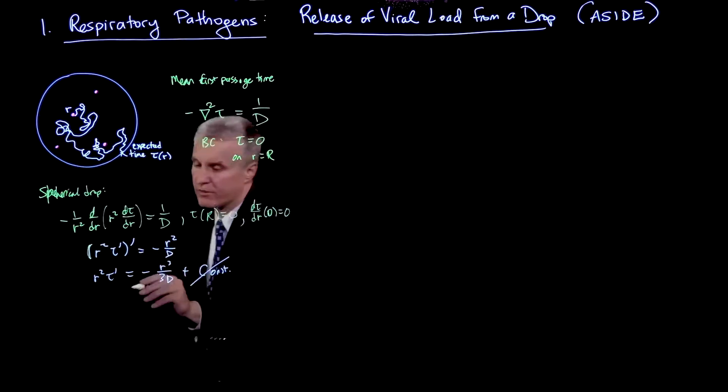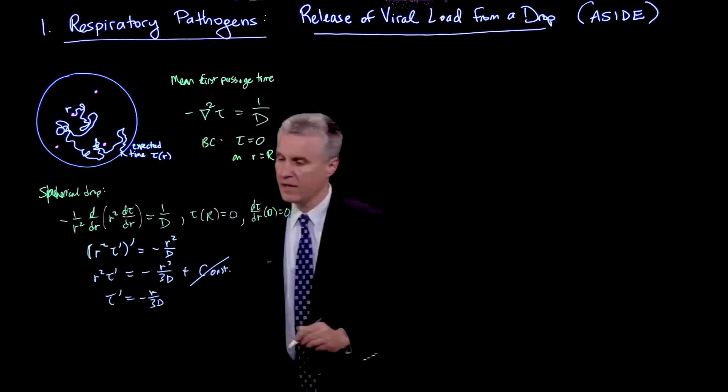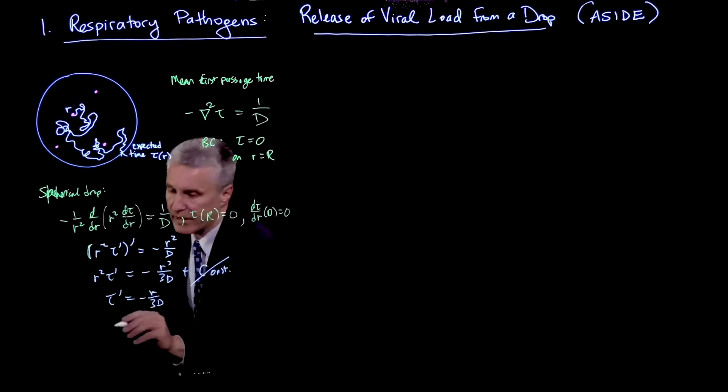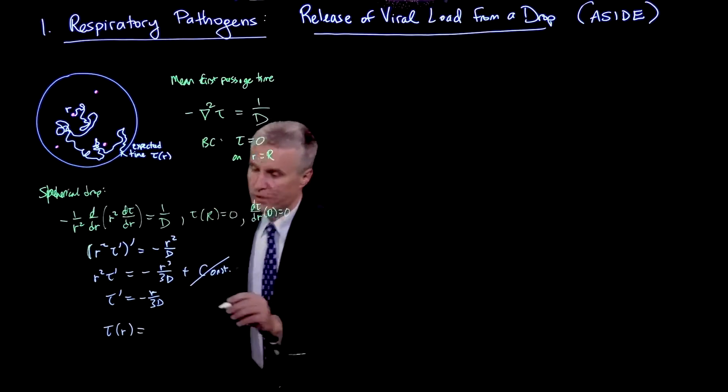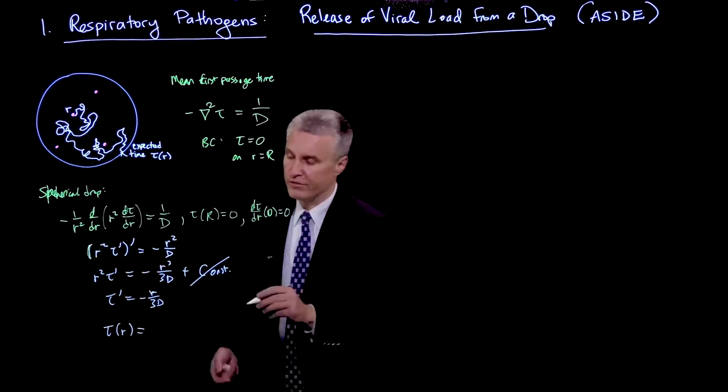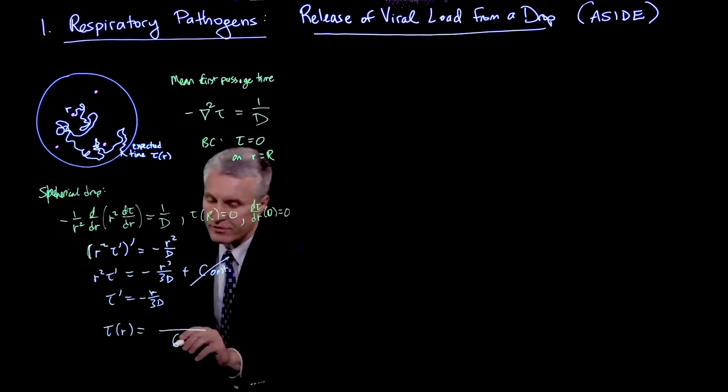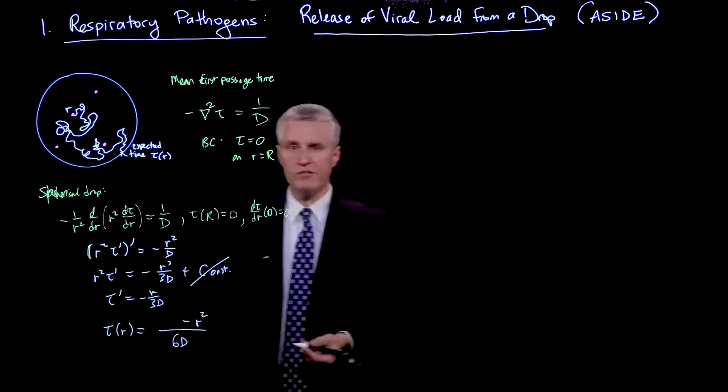And that constant integration according to the symmetry boundary condition has to be 0 because tau prime is 0 at r equals 0. So we can simplify this and write tau prime is minus r over 3d. And so then I can integrate again. And I found that tau of r is, well, I integrate this. I get r squared over 2 is integral of r. So that gives me an r squared over 6.